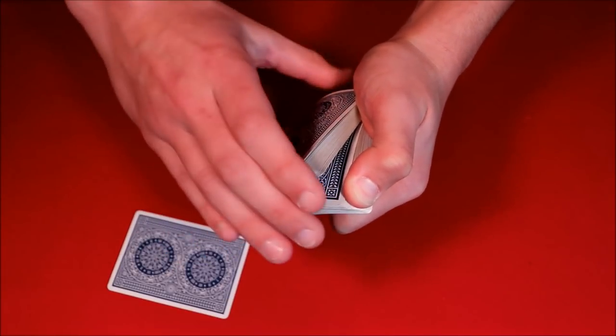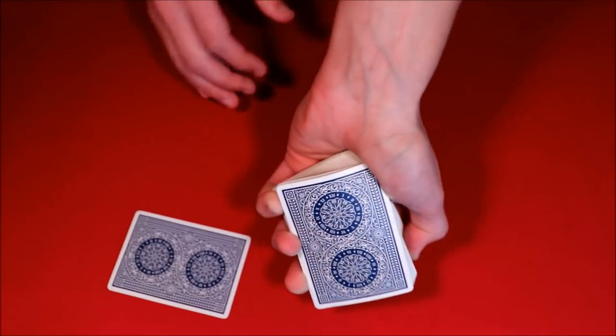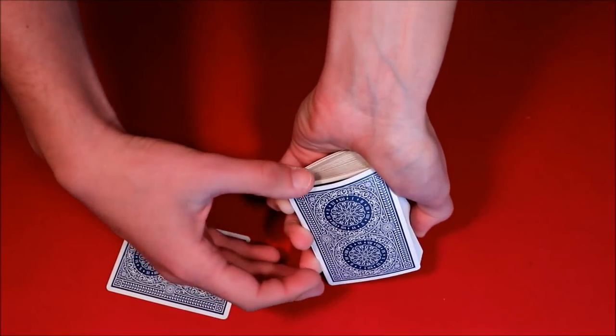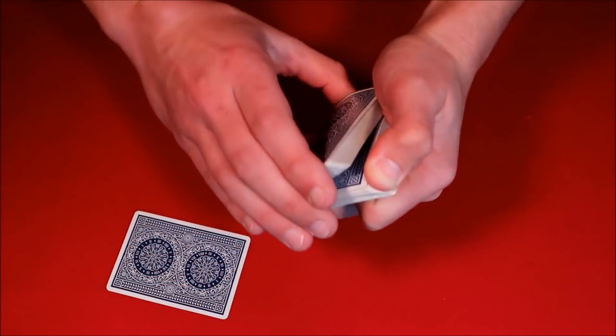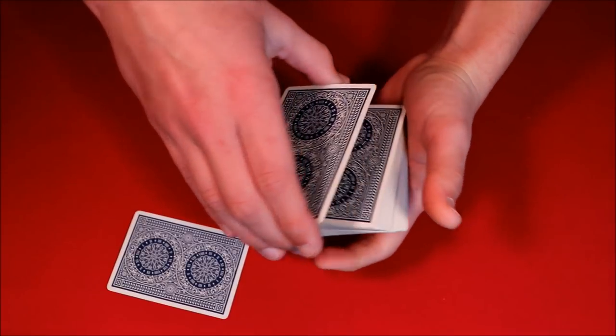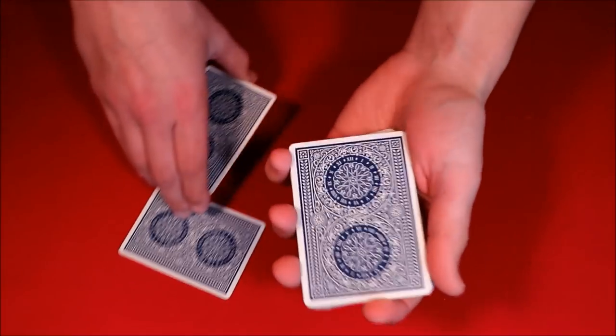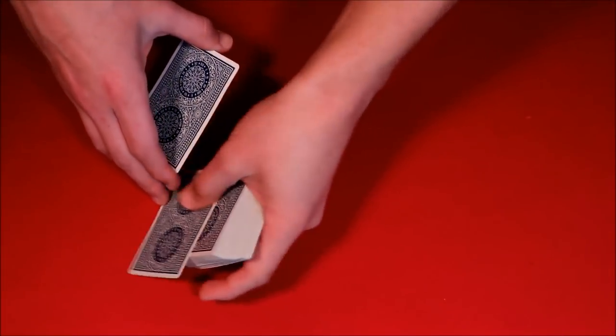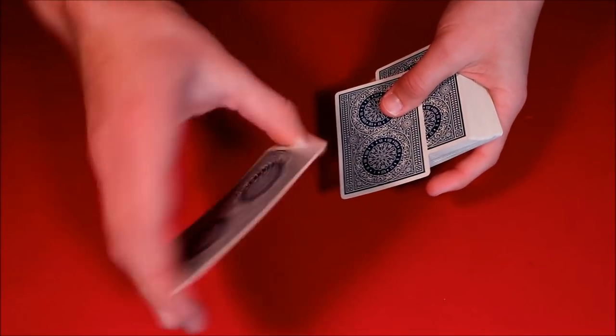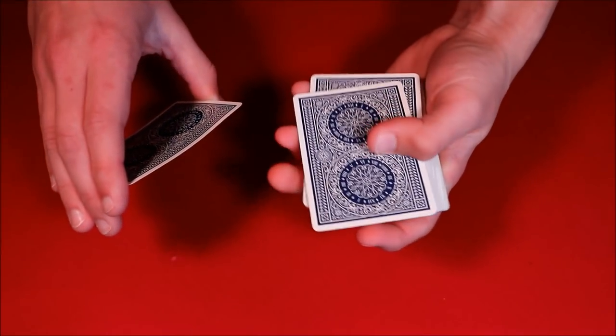you come over with your right hand, you cover up the deck, your thumb is grabbing this little break right here, the top card. You cover it up, you let go of the break, pick up only one card, and this is going to be one of the kings. You ask them, go ahead and put the card in the middle, and your fingers are covering up the thickness of just the one card. So they still think it's half the deck.